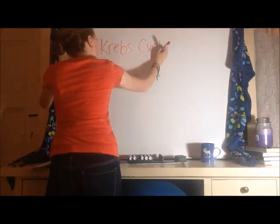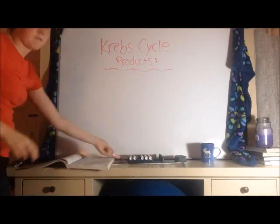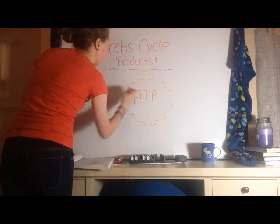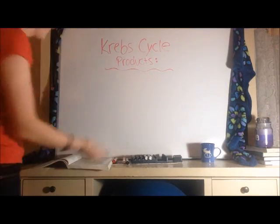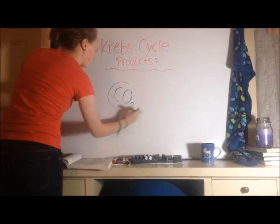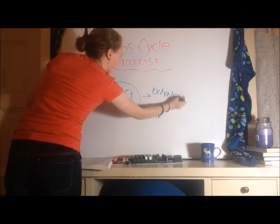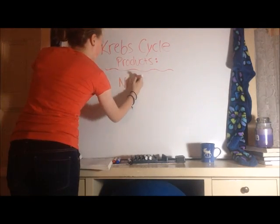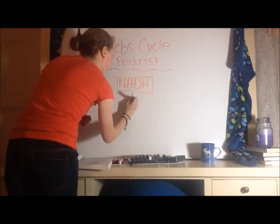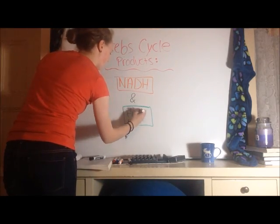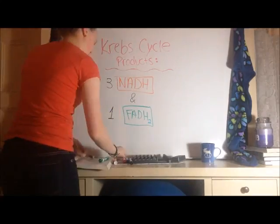The products of the citric acid cycle are ATP, which is produced in the same manner as in glycolysis — adding phosphate to ADP — carbon dioxide, which is then exhaled, and three molecules of NADH and one molecule of FADH2. Both are electron carriers that will come in handy during the electron transport chain coming up next.